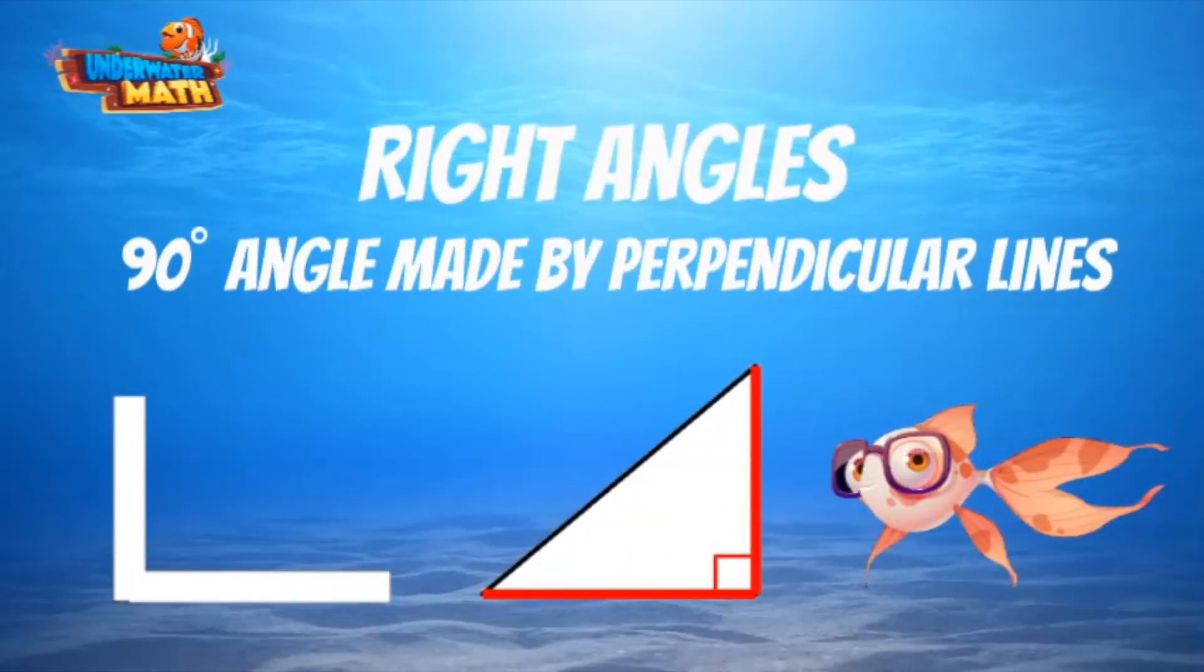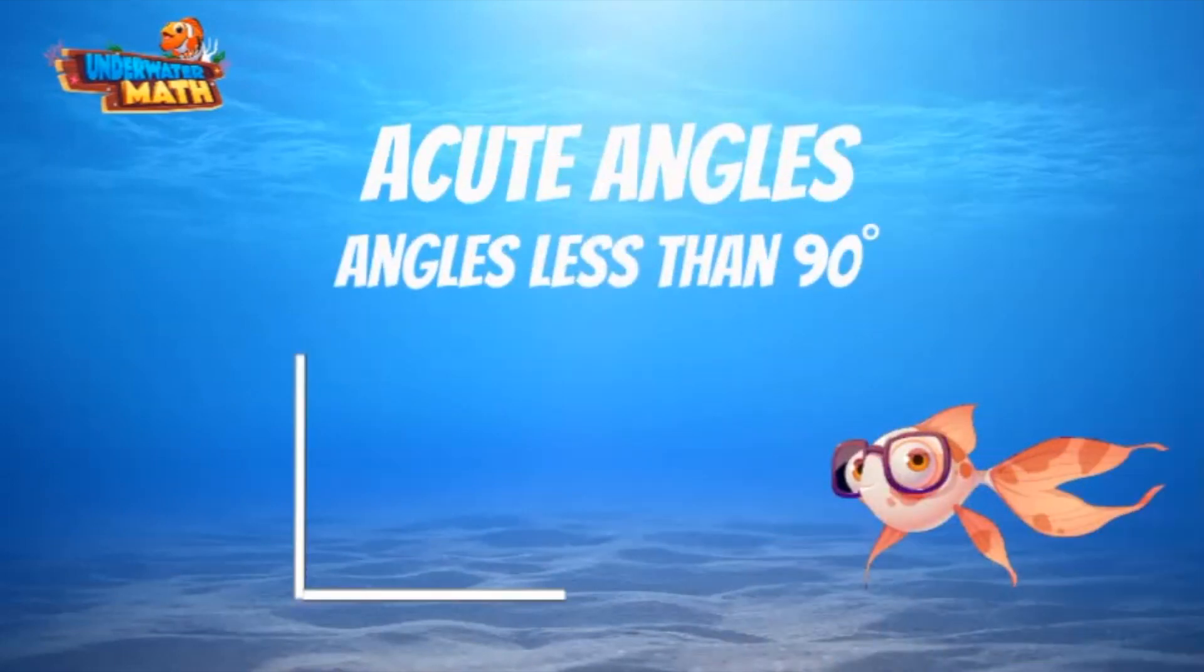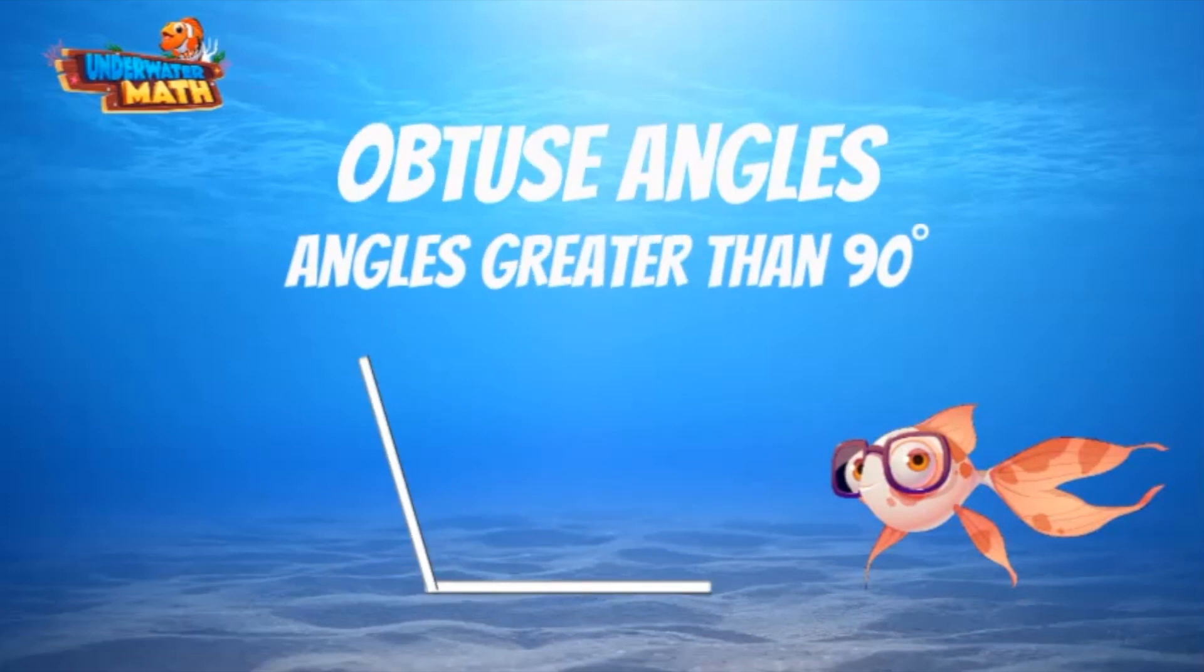Acute angles are less than 90 degrees, like an 80 degree angle, 50 degree angle, 30 degree angle, or 10 degree angle. They are such cute little angles! Obtuse angles are greater than 90 degrees.